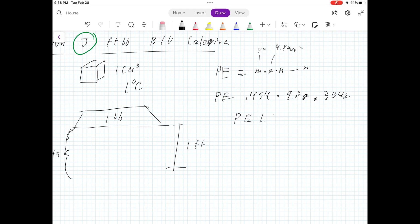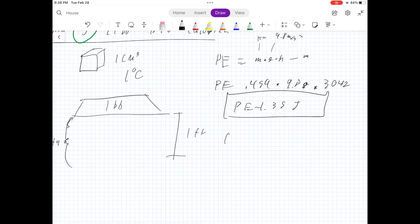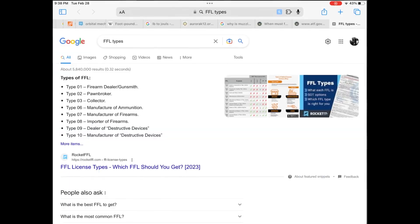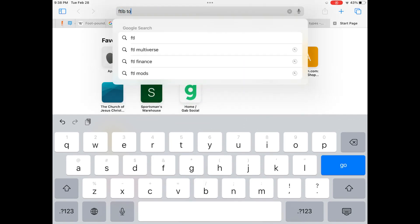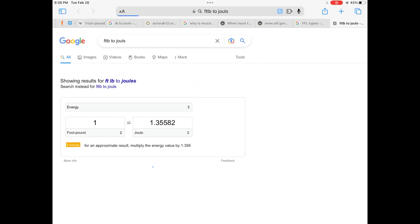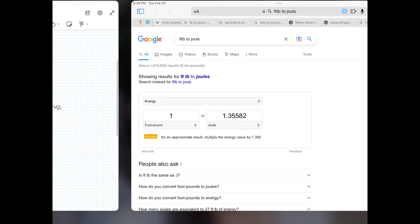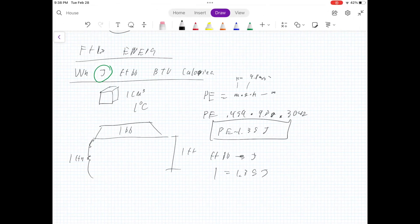That gives us our potential energy of 1.35 joules. And if you go to an online calculator of foot pounds to joule calculator, you'll get this exact thing. That one foot pound is equal to 1.35 joules. Imagine that I can even show you that one foot pound, boom, 1.35 joules. I rounded of course.